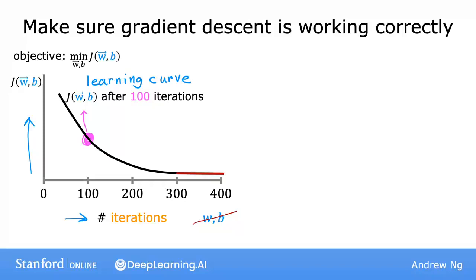That is, this point on the vertical axis. And this point here corresponds to the value of j for the parameters that you got after 200 iterations of gradient descent. So looking at this graph helps you to see how your cost j changes after each iteration of gradient descent.